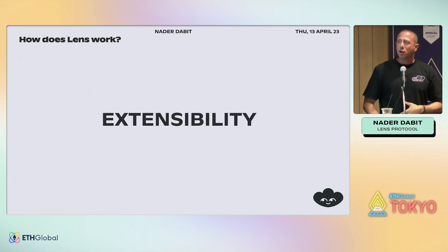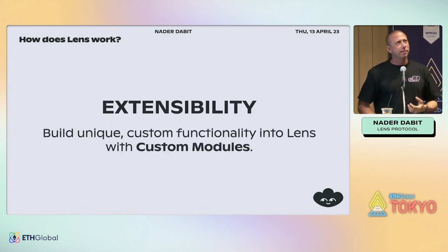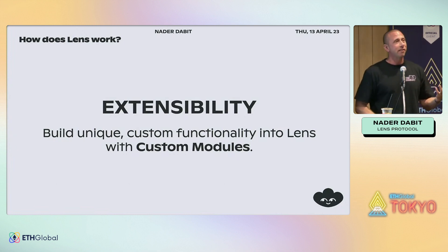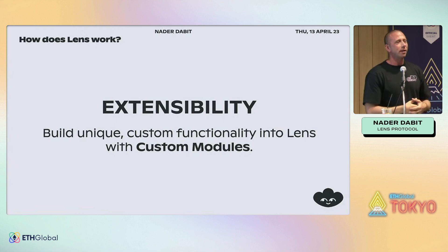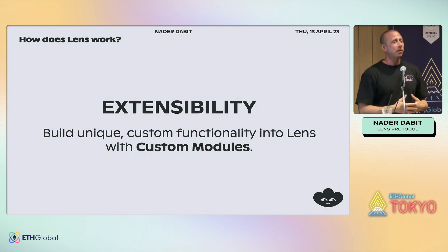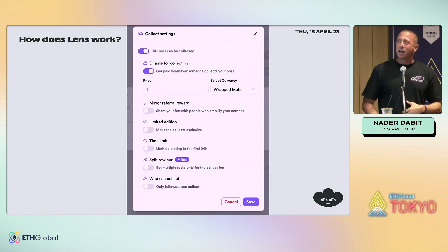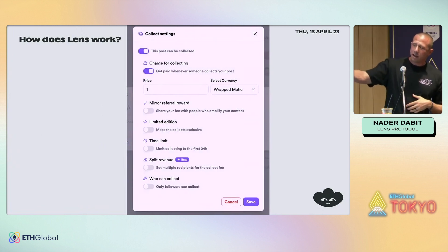One of the really interesting things Lens enables — not really possible through traditional social media — is extensibility around the actual features of the protocol itself. You can build unique and custom functionality into Lens as a developer. This is almost like if you were using Twitter and thought 'it would be so cool if you could do this one thing' — obviously you're not going to send a pull request to Twitter and get it merged. With Lens you can: create a custom module, submit it to the repository, get it merged, and everyone in the world can start using it too.